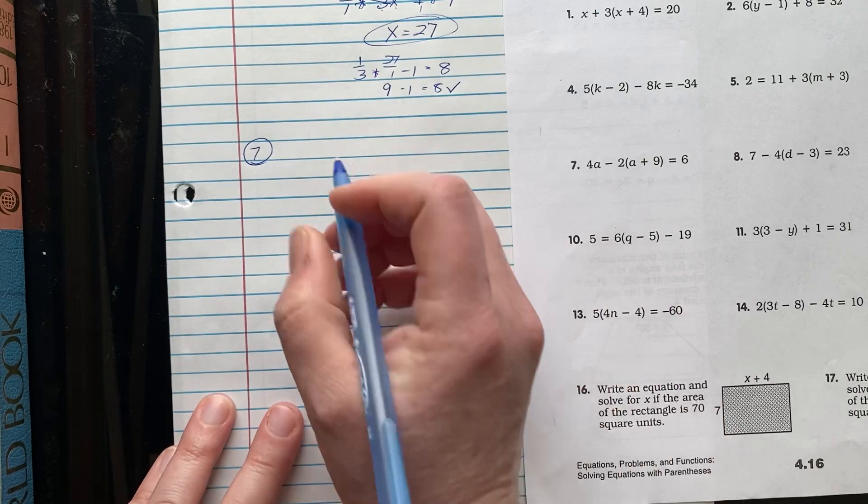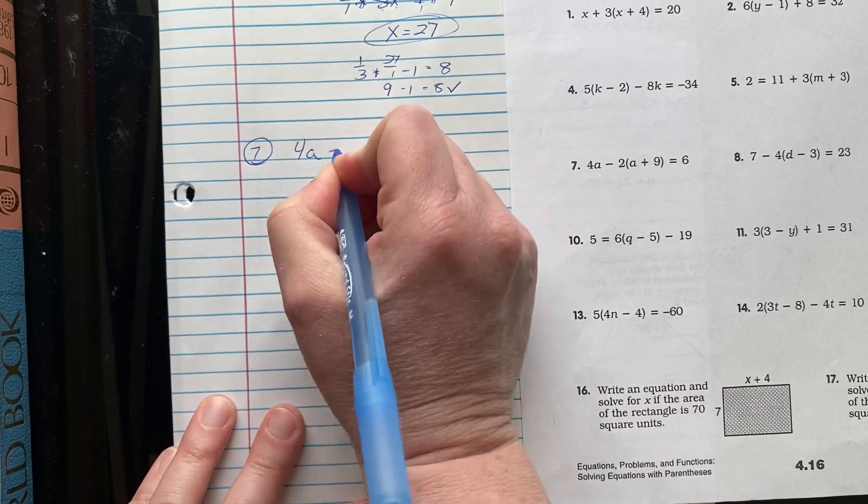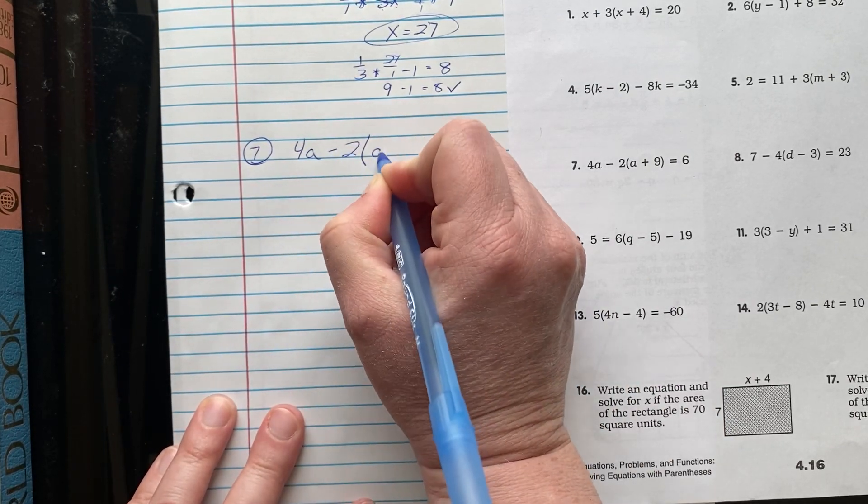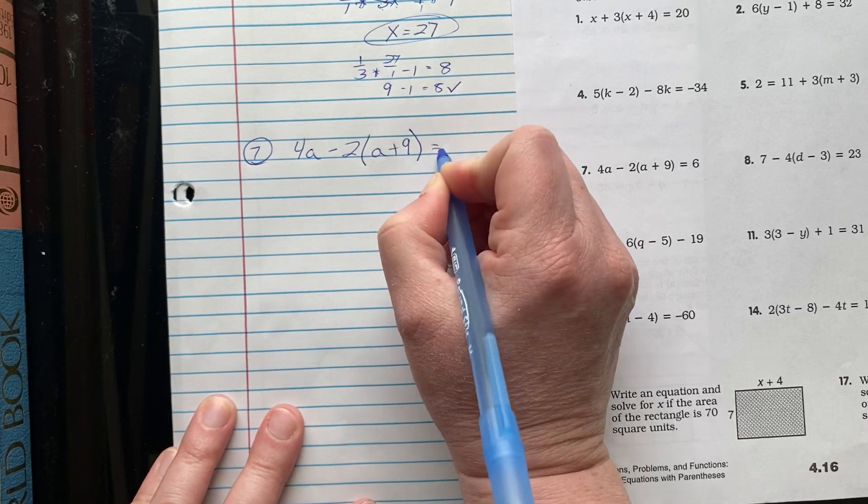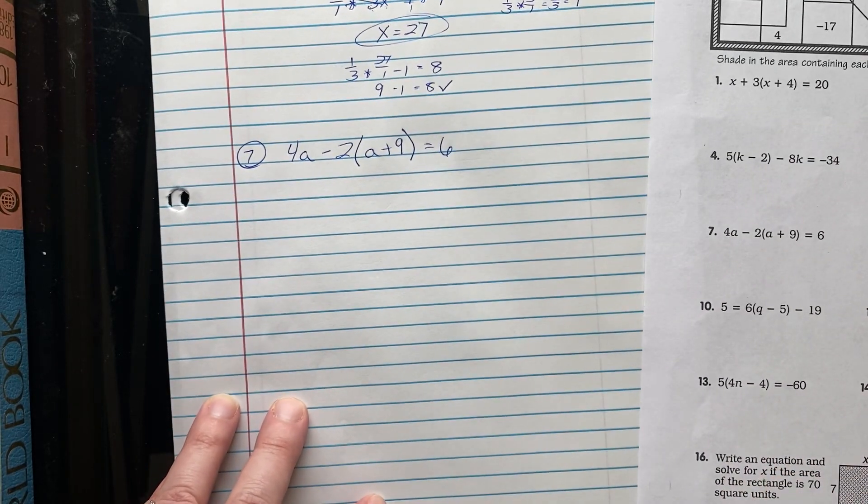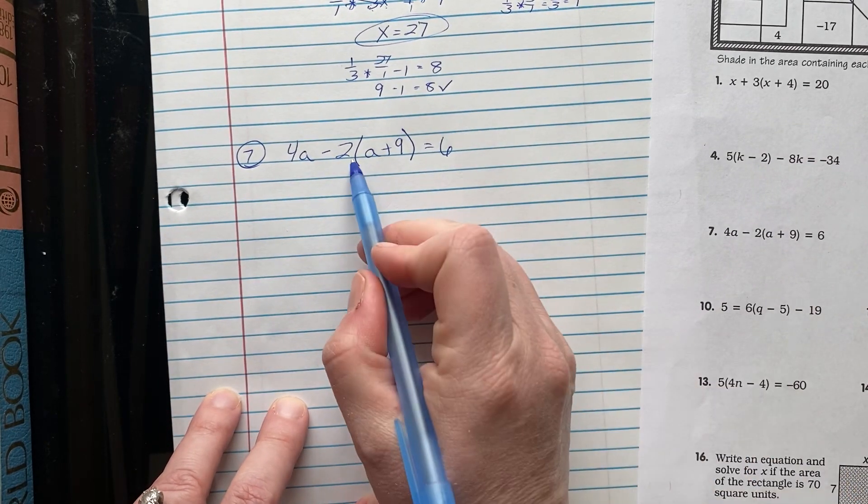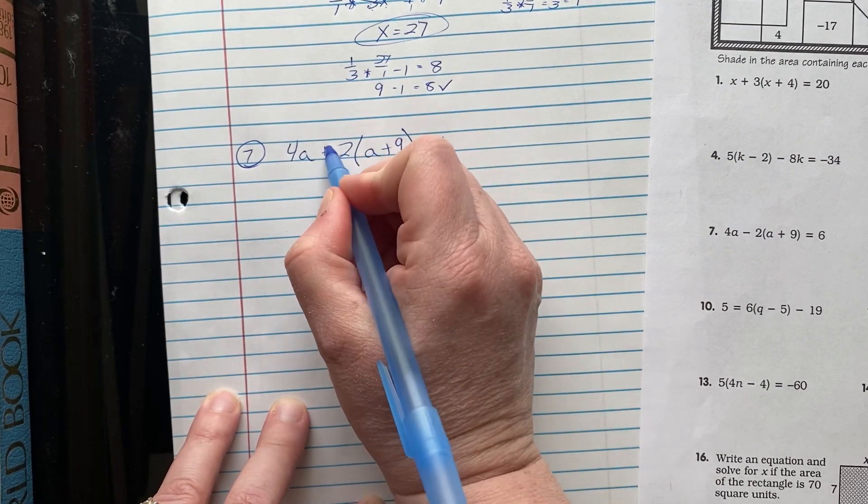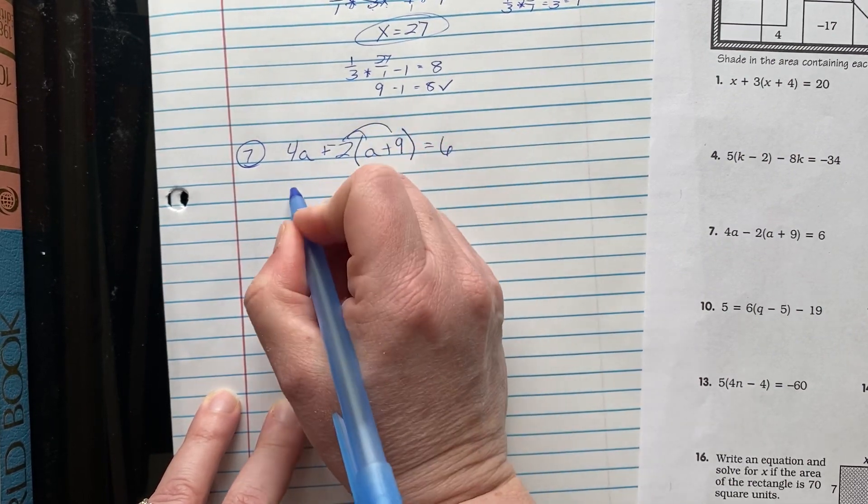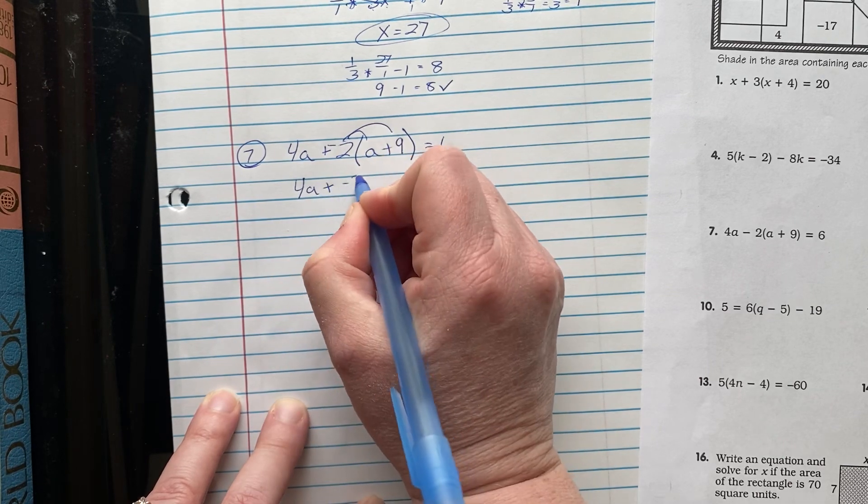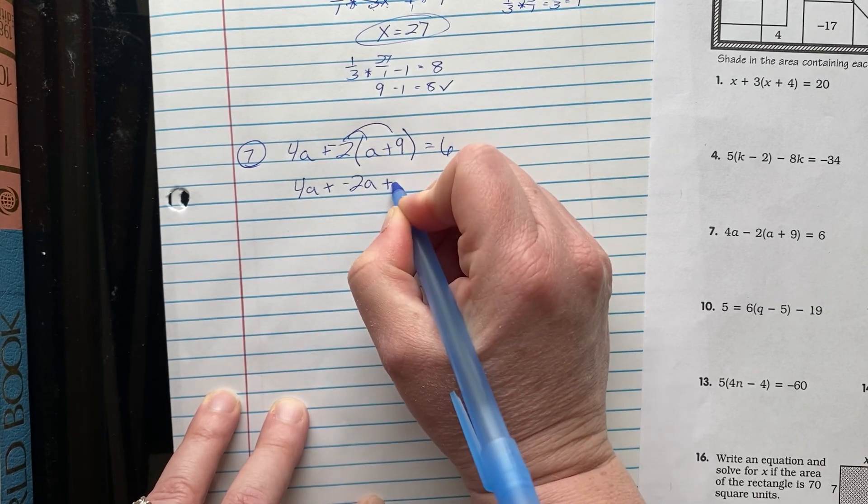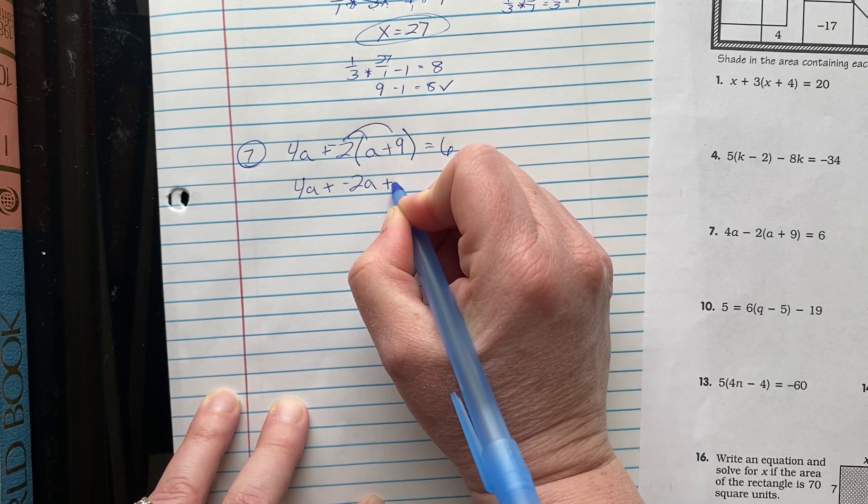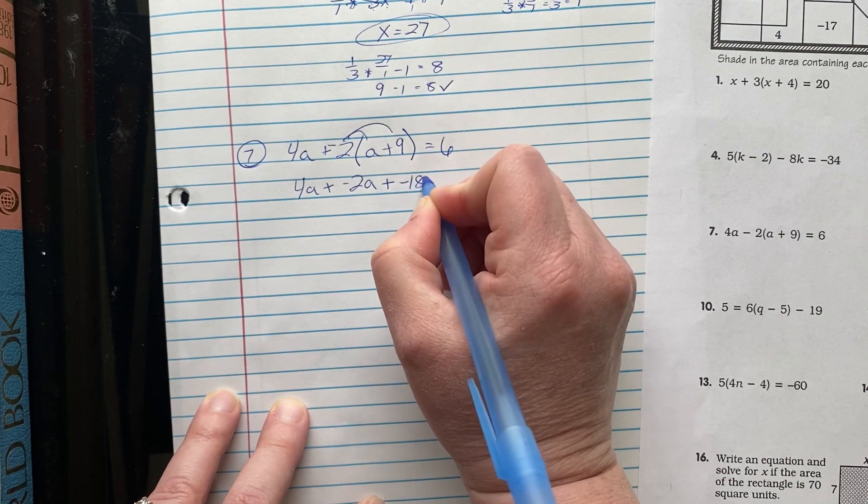So I'm going to do number 7, which is 4a minus 2 times the quantity a plus 9 close quantity equals 6. Here I must add the opposite or the second term will be wrong. I have to add the opposite to distribute a negative term. 4a plus negative 2a plus negative 2 times 9 is negative 18 equals 6.